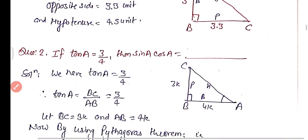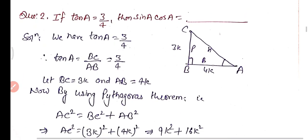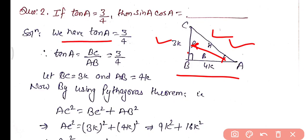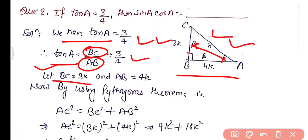Question 2: If tan A = 3/4, then sin A × cos A will be equals to? We have triangle ABC where the side opposite to angle A is BC (perpendicular), the adjacent side is AB (base), and the hypotenuse is AC. Since tan A = BC/AB = 3/4, let BC = 3k and AB = 4k.